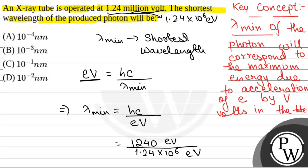This is electron volt and this is electron volt nanometer. On dividing this, we will get the value of minimum wavelength in nanometer. That will be 10 to power minus 3 nanometer which is option B. Hope you all understood it well. Best of luck.